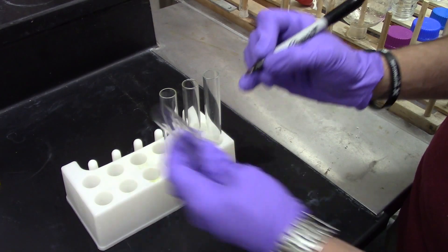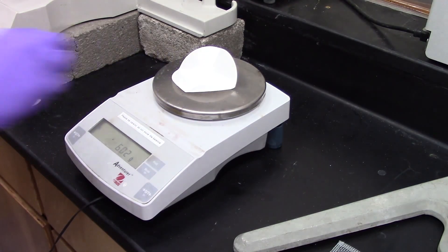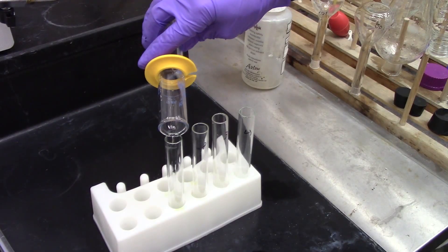The first step is to number four test tubes and place them in a rack. Weigh potassium nitrate and water into the four tubes as indicated in this table.